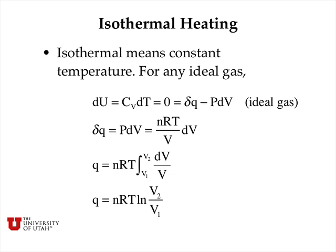In isothermal expansion — constant temperature — for any ideal gas dU equals CV·dT, and since dT equals zero, dU equals zero. From the first law, dQ equals P·dV, which equals nRT over V times dV by the ideal gas law. Integrating, Q equals nRT times the integral of dV over V, which equals nRT times the natural log of V2 divided by V1. So the heat added to maintain constant temperature during expansion equals nRT·ln(V2/V1).